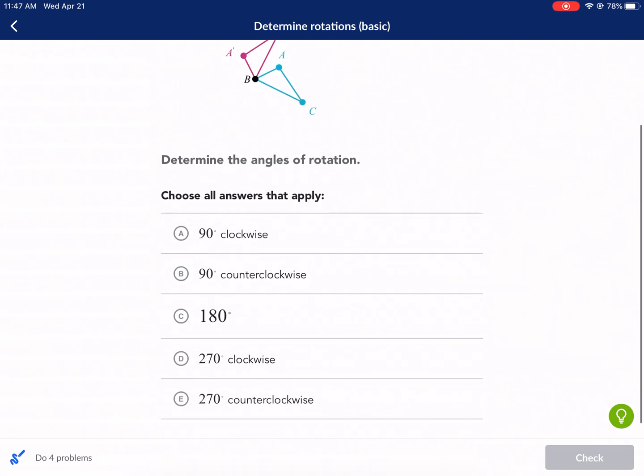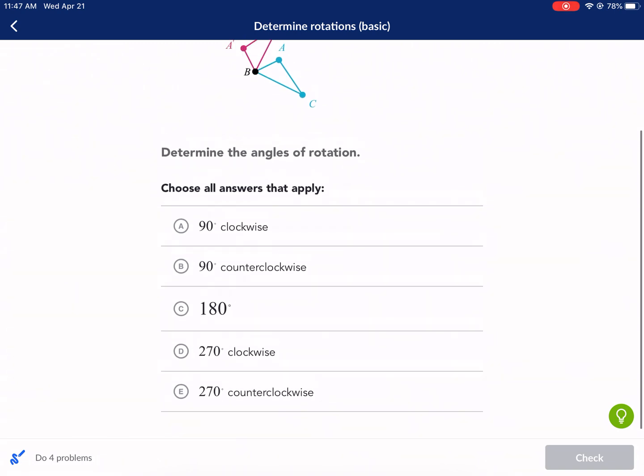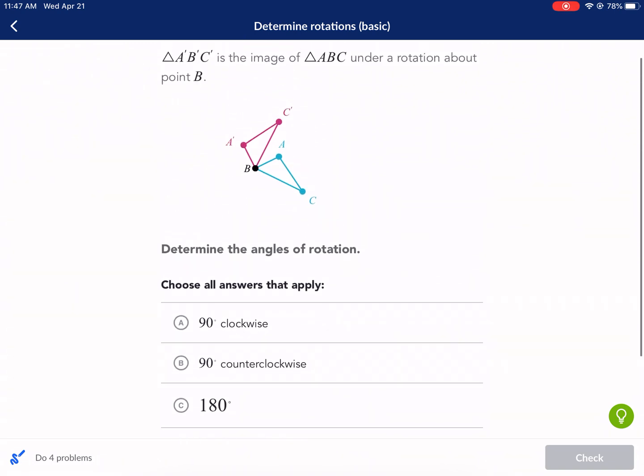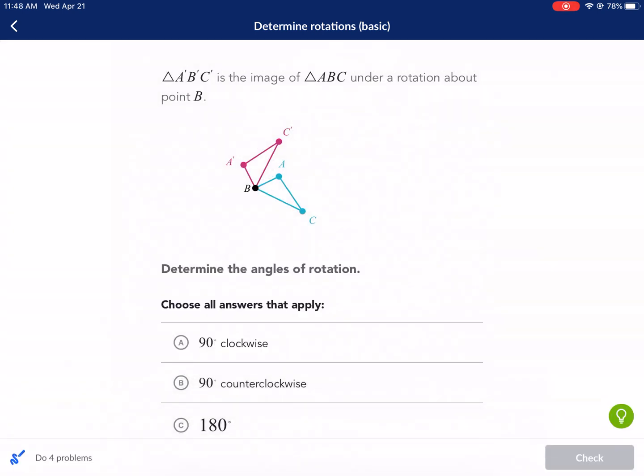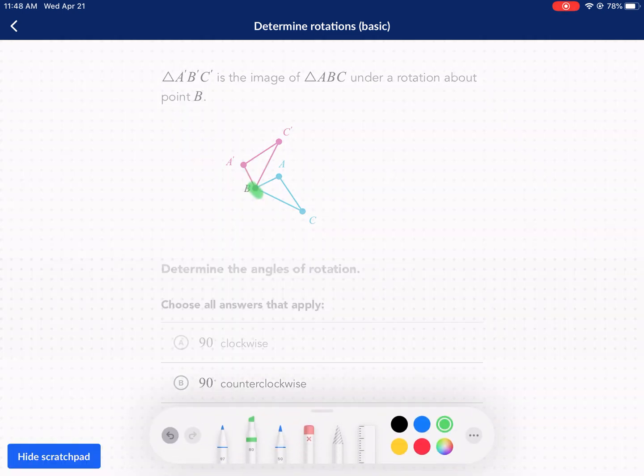So image comes second. Determine the angle of the angles of rotation. So like we pointed out earlier, rotation about a fixed point. So if there is a point attached to it as B is, B and B prime are going to be in the same spot.